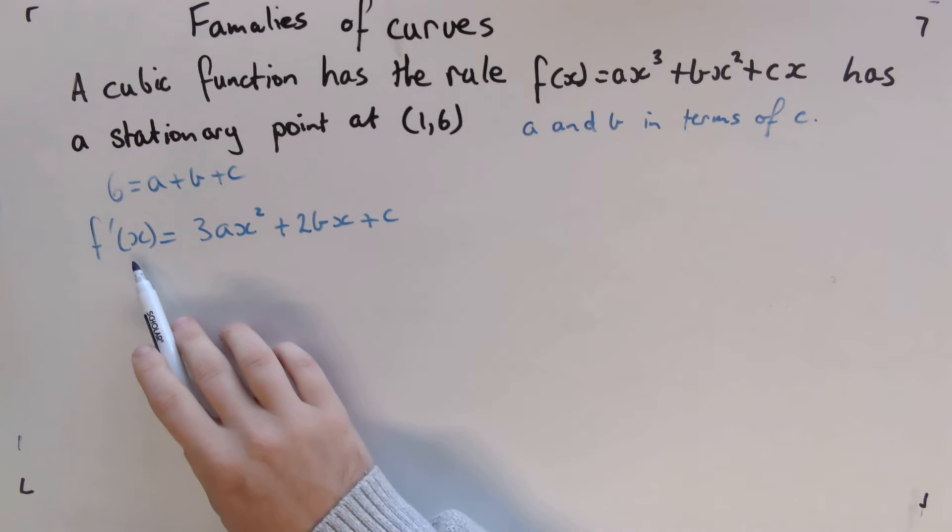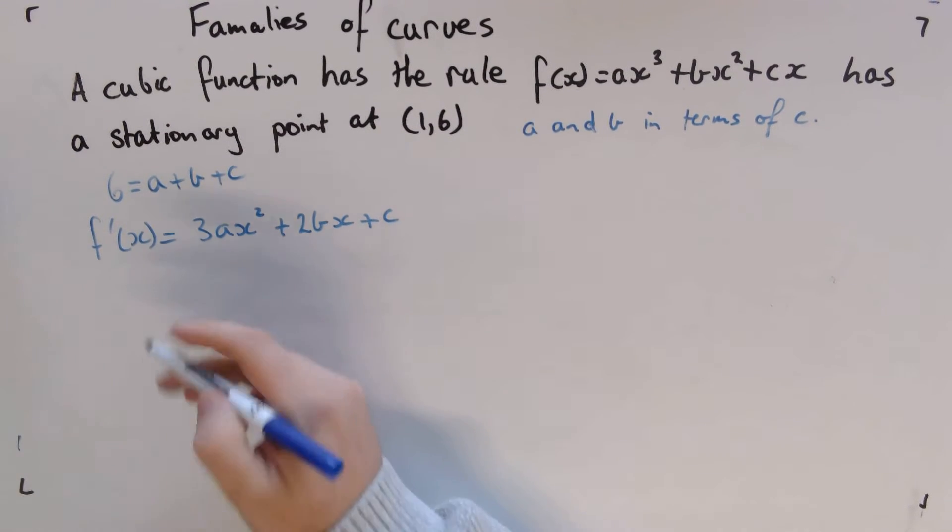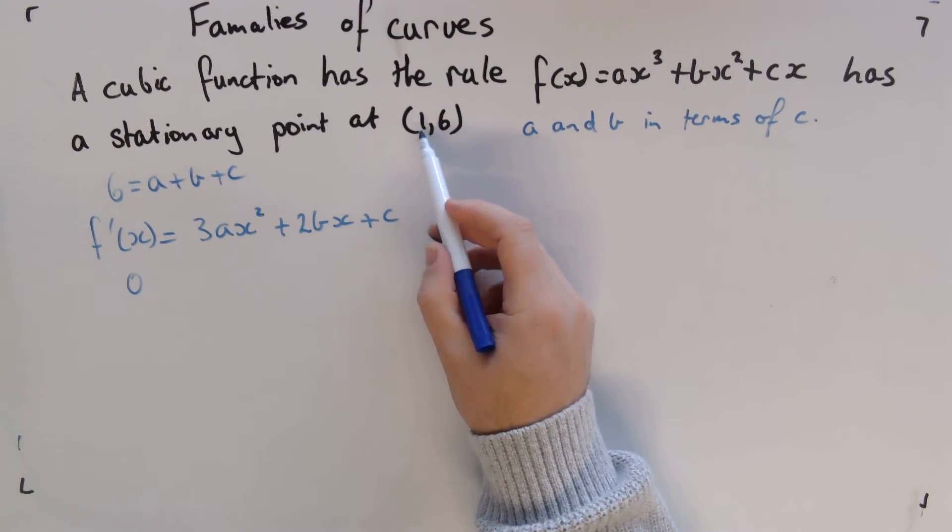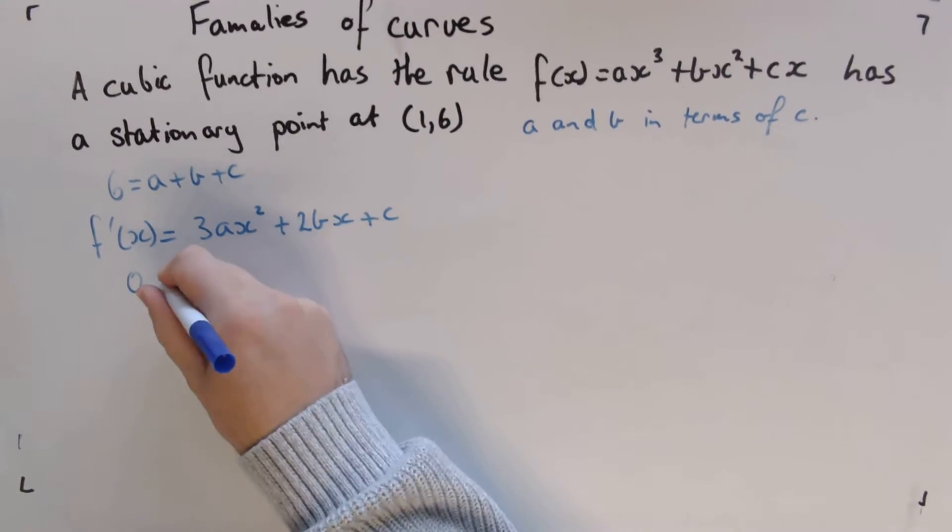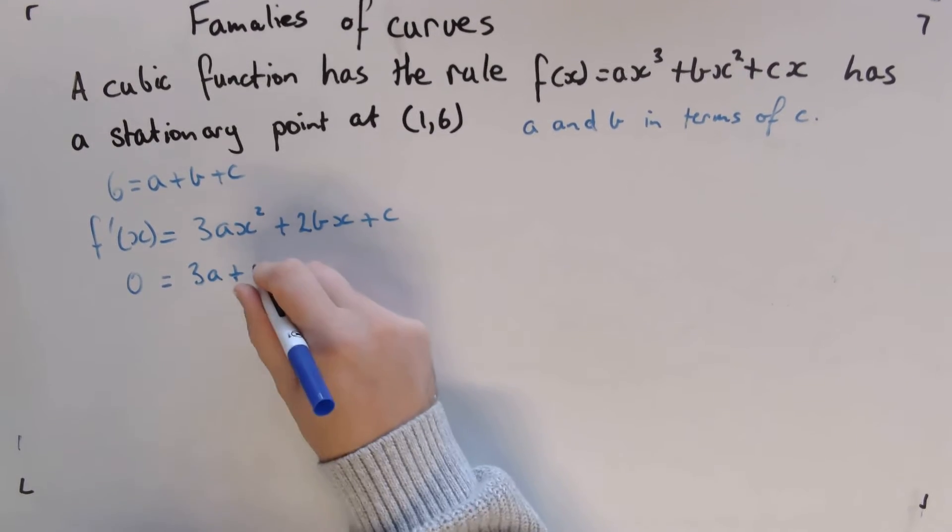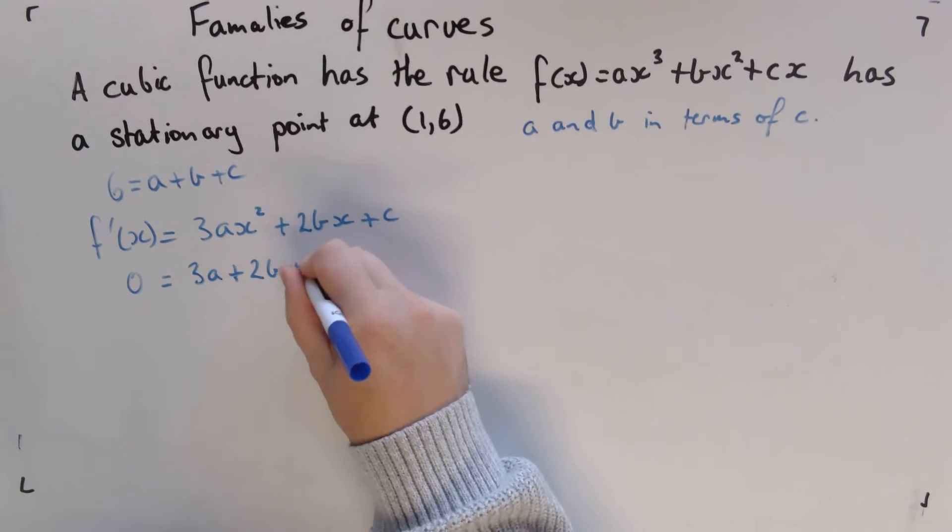And if it's a stationary point, then we know the gradient is 0. So we'd say 0 happens there when we put in our x value of 1 because that's where the stationary point is occurring. So then when we do that, we're going to get 3a + 2b + c.